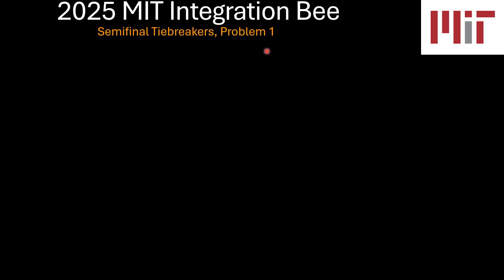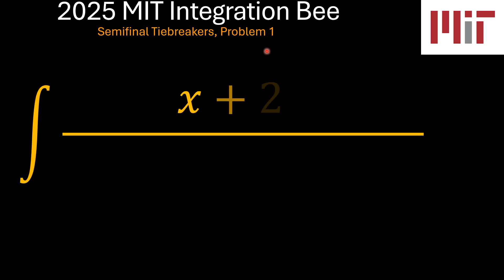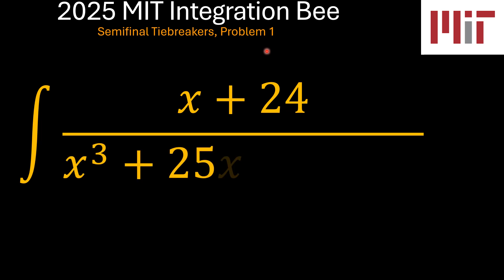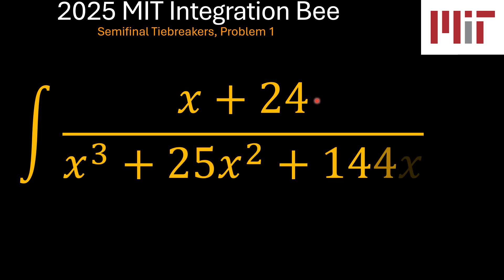Today we step back to the 2025 MIT Integration B semi-final tie-breakers, problem number one, which was the indefinite integral of x plus 24 over x cubed plus 25x squared plus 144x. This is a fairly simple problem. Let's see how we may be able to solve this.